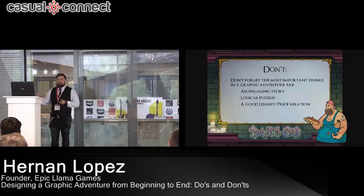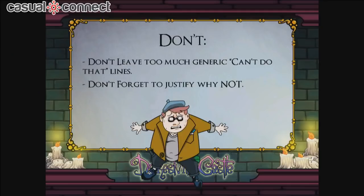DON'T leave 'I can't do that' lines generic. Players will try everything, so they'll hear that a lot. Try to justify why the character cannot do something. Instead of 'it's too heavy to carry,' try something inventive like 'I'm not in the mood for a piano lesson.' Give the player a hint about the character every time they try something — so instead of becoming frustrating, it becomes something cool to hear.